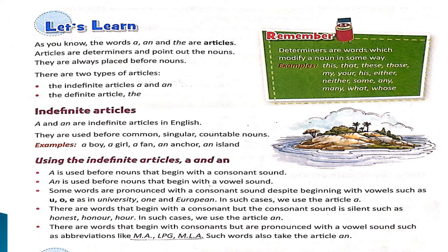Now, there are times we do not use 'a' and 'an'. Let us look at when we don't use 'a' and 'an'. With uncountable nouns, we don't use 'a' or 'an' — for example, rice, milk, etc. In such cases, we can use 'some'. And we don't use 'a' or 'an' before plural nouns. So, dear students, I hope you understood the use of 'a' and 'an'.